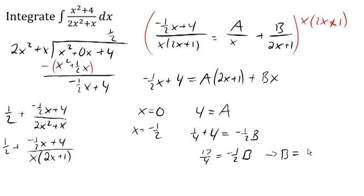So putting these now as the terms there, this is going to become 1 half plus 4 over x plus negative 17 halves over 2x plus 1. And we'll continue this question in the next video.